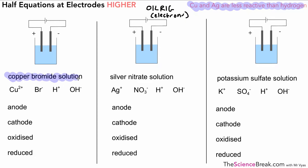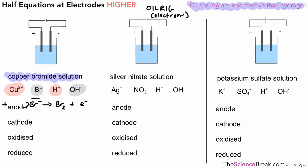The first one is copper bromide solution, so we have positive ions — copper and hydrogen — and negative ions — bromide and hydroxide. At the anode, remember we get oxygen unless there's a halide present, and yes we have a halide, so we're going to get bromide ions attracted to the anode because they are negative. That gives us bromine gas, Br₂, and we've got Br₂ with only one bromide ion shown, so we need two bromide ions, which release two electrons to make our bromine gas.